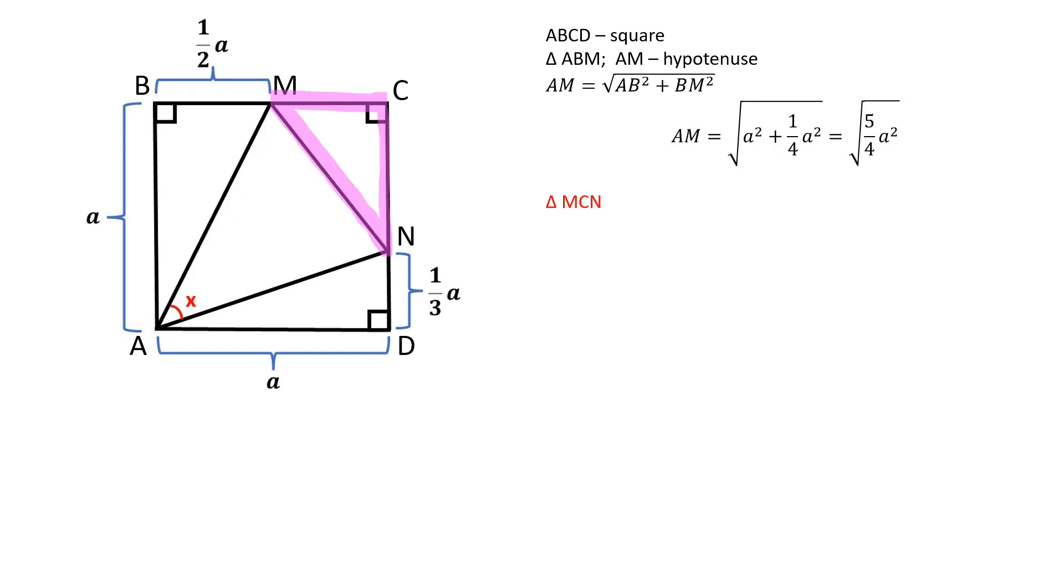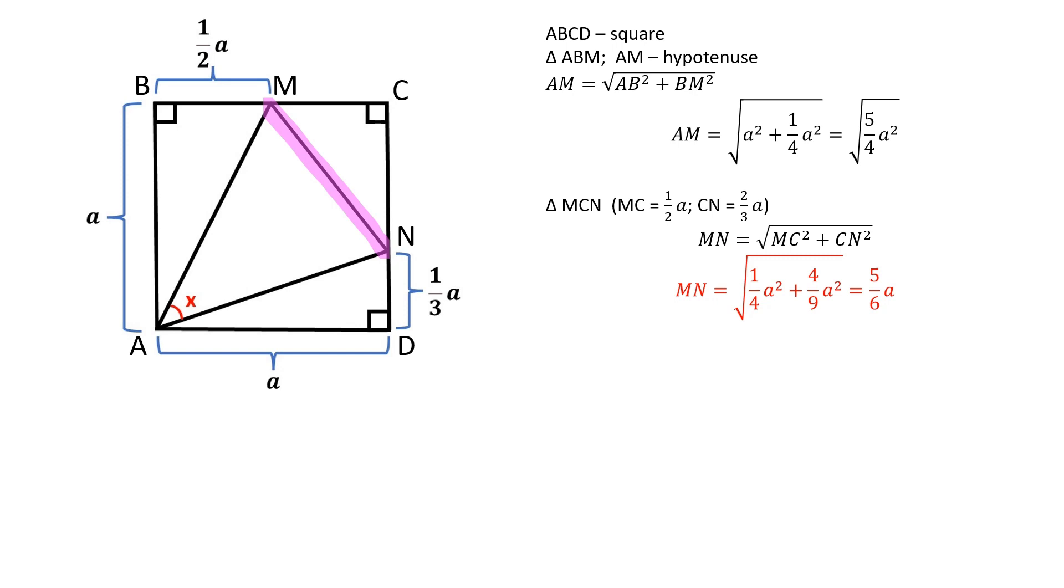In the triangle MCN, MC is equal to A over 2. CN is equal to 2A over 3. We can find MN by using the Pythagorean theorem. MN is equal to 5A over 6.